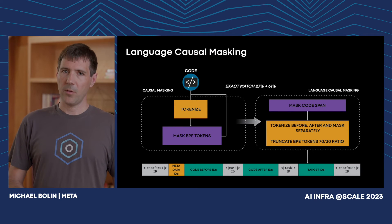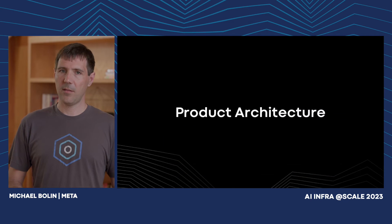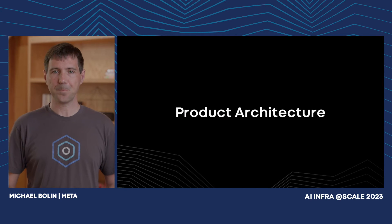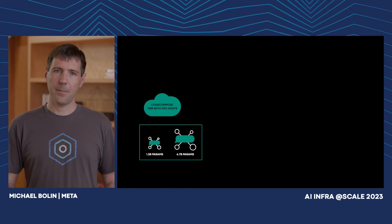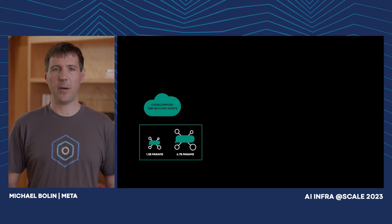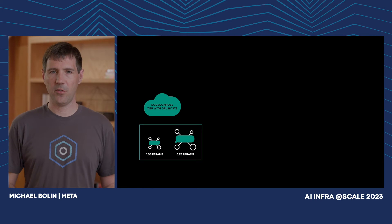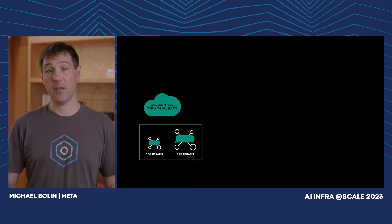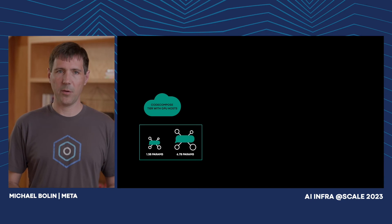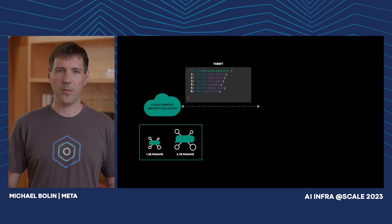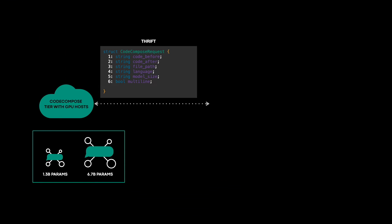Now let's see how we can leverage the model to provide code suggestions to end users. At Meta, we have a tier of machines equipped with powerful GPUs, each with sufficient memory to host both the 1 billion and 6 billion variants of the Code Compose model. Clients can make requests to this tier via Thrift. The caller specifies the code before and after the cursor, as well as the file path, language, and which model to use to process the request.